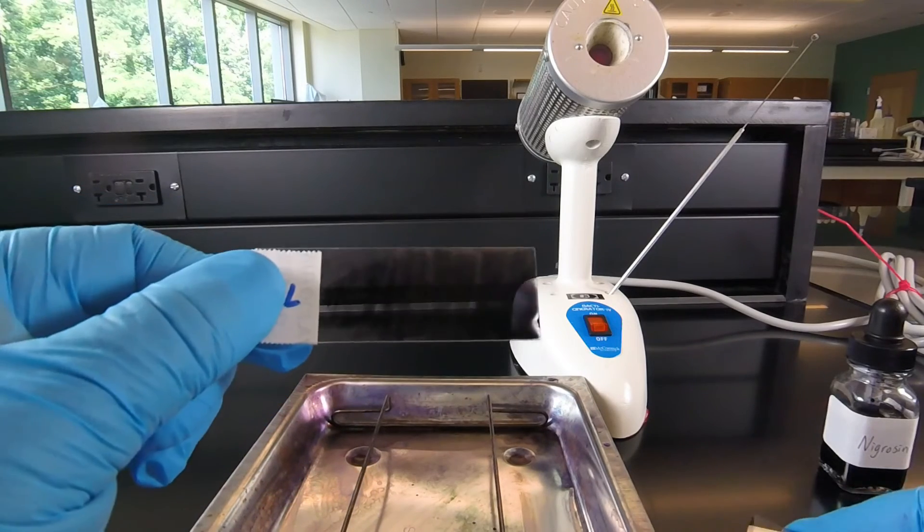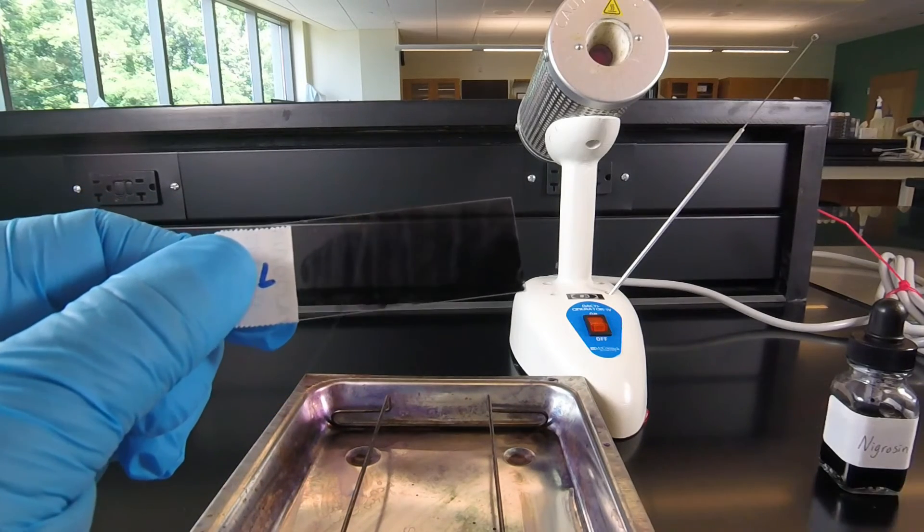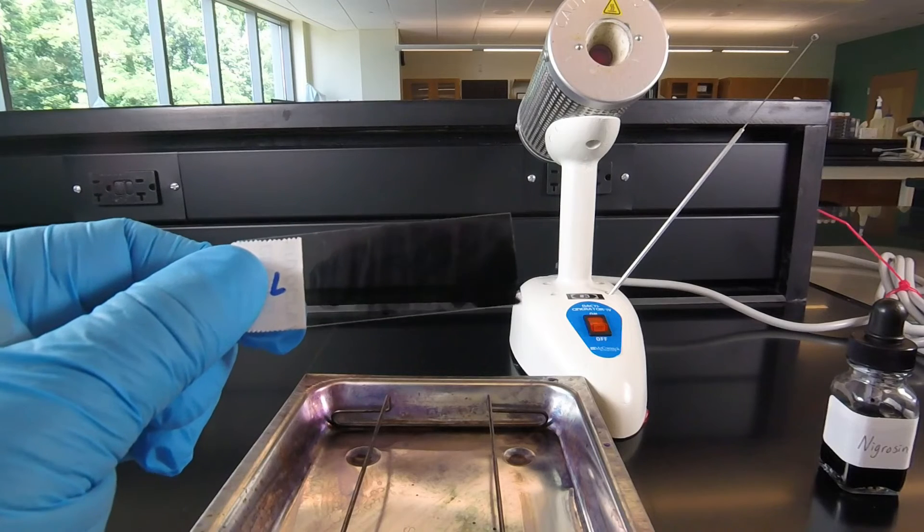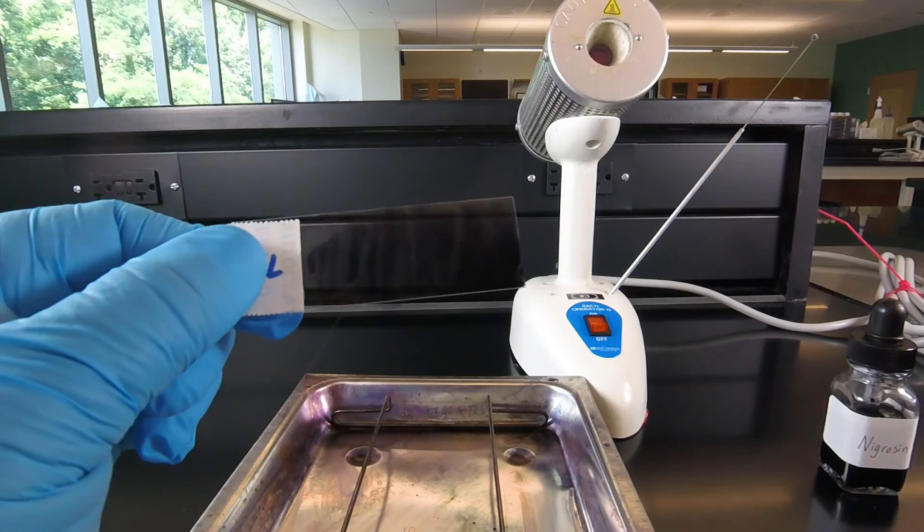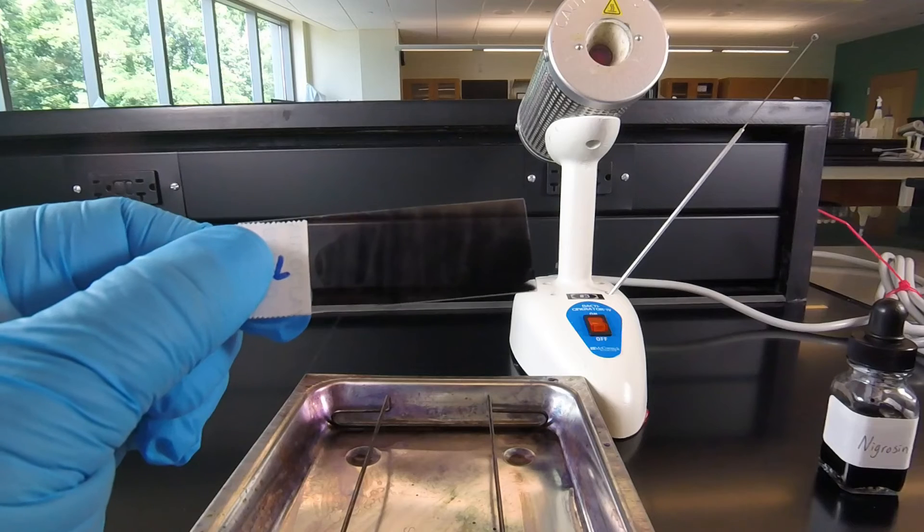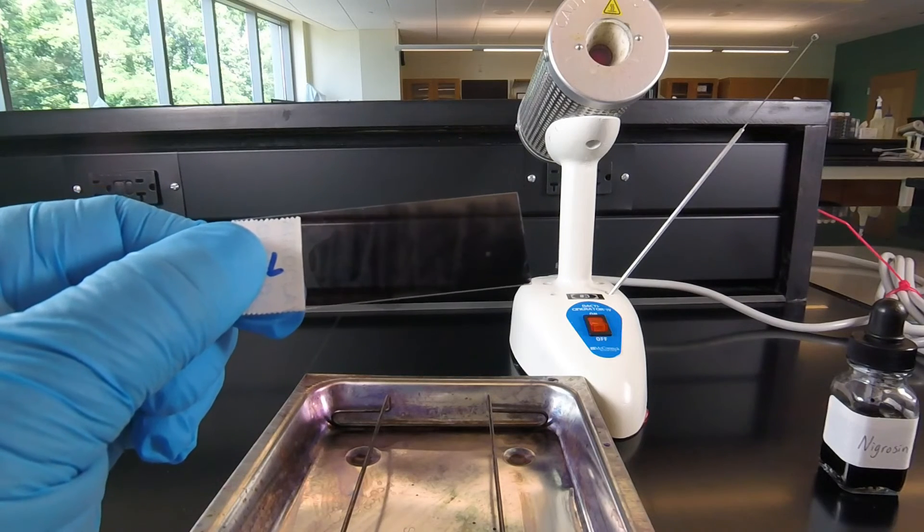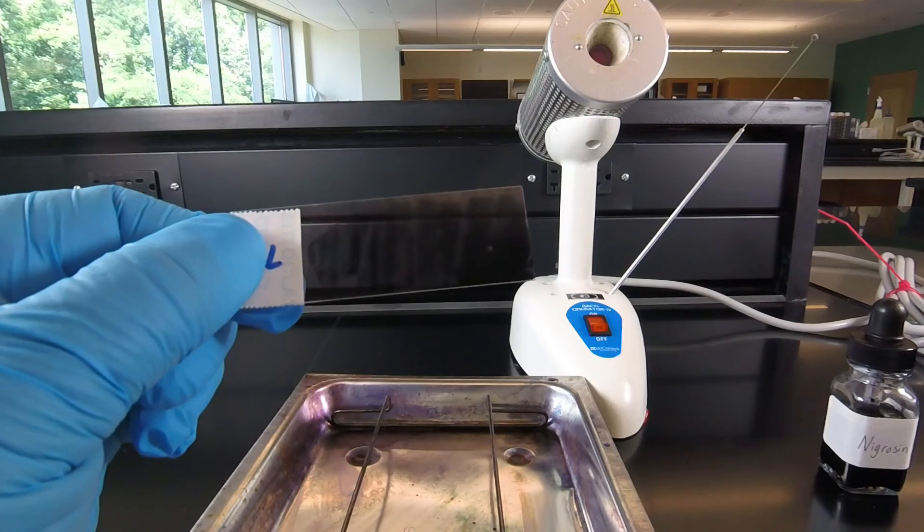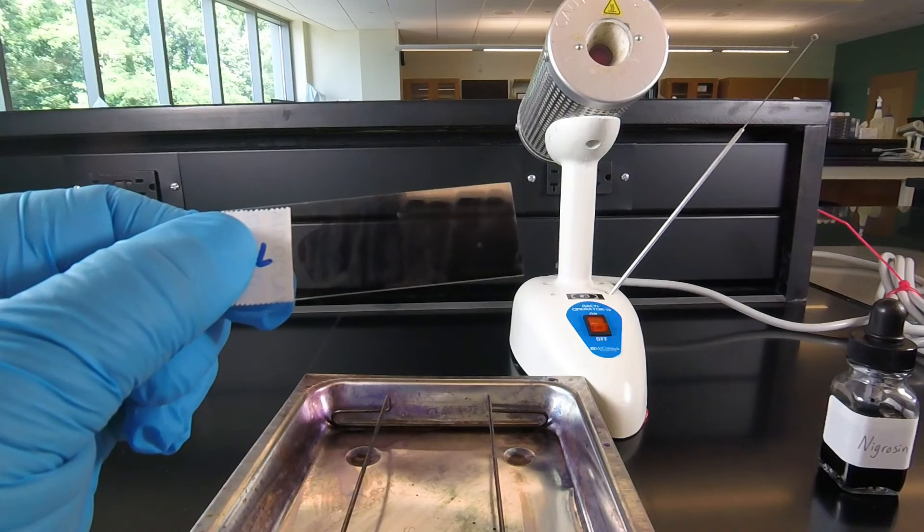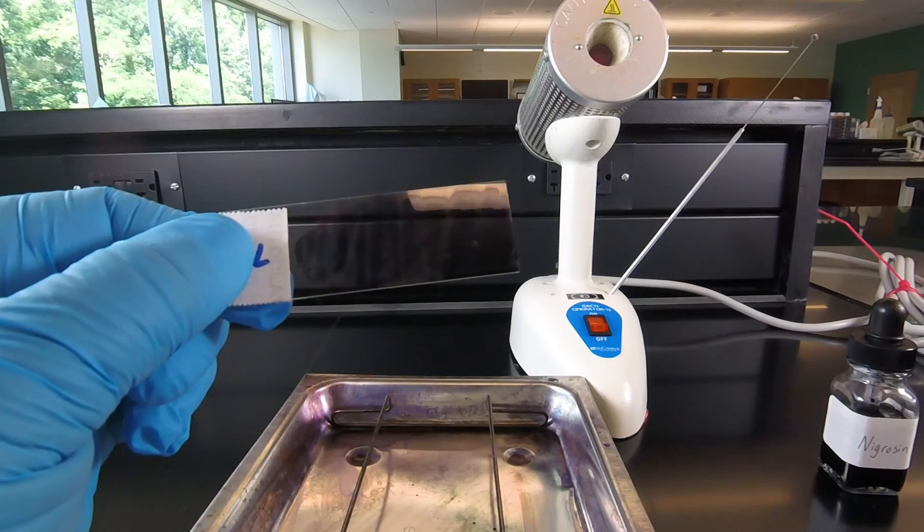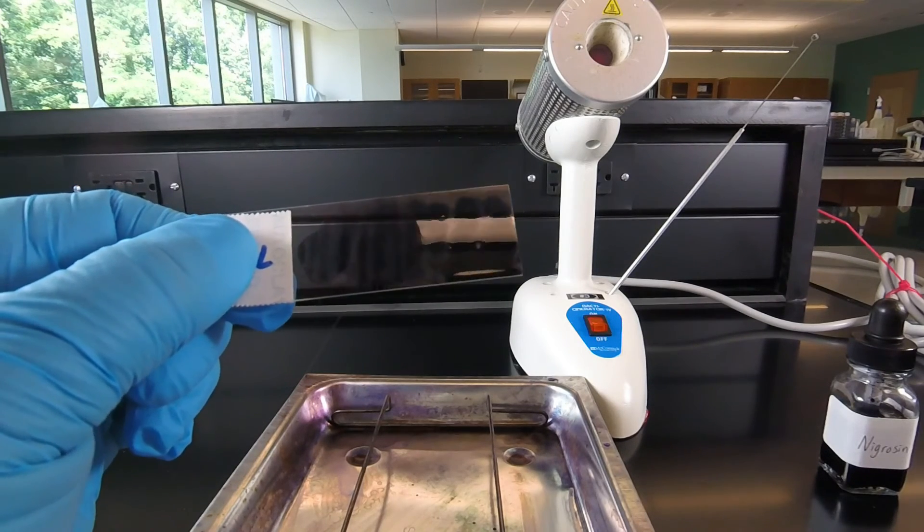And what we're looking for are alternating light and dark areas on the slide. We'll be looking for an area that's kind of in between. If the slide is too light in color, we won't see any contrast between the organism and the background. If the dye is too thick, then we're not going to be able to see through the dye.